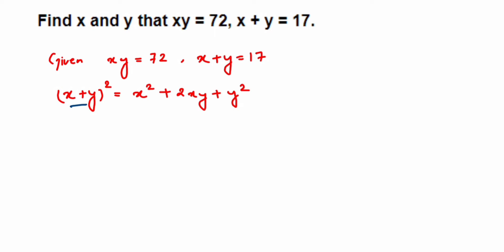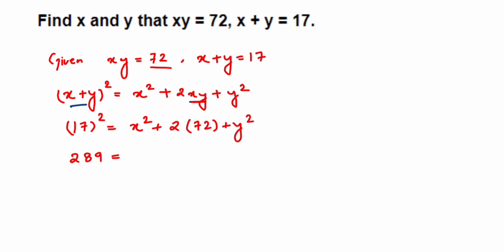Substituting: (x + y)² gives us 17², which equals x² + 2·(xy) + y². In place of xy I substitute 72, so we get 17² = x² + 2(72) + y², which is x² + 144 + y². But we still don't know x² and y² individually.